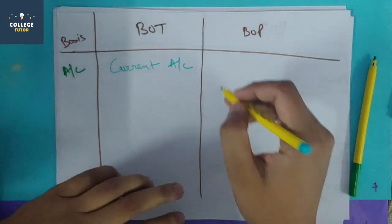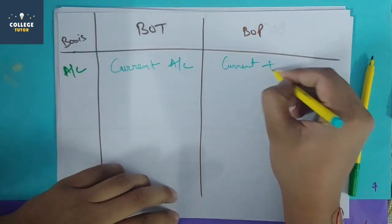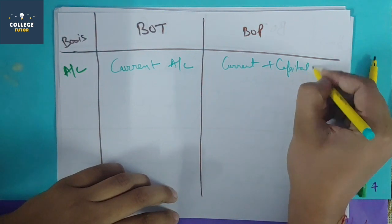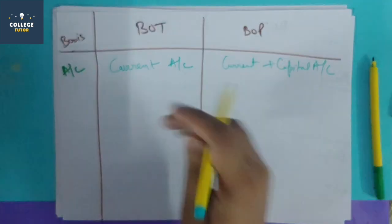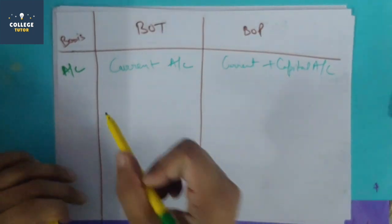Since the balance of payment includes current and capital accounts, we have to maintain both the current and capital accounts.